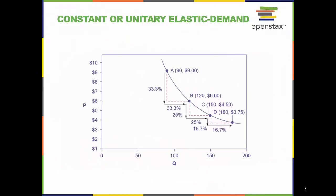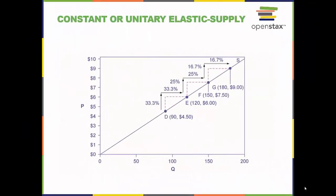A demand curve with constant unitary elasticity will be a curved line. Notice how price and quantity demanded change by a constant percentage in each step down the demand curve. A constant unitary elasticity supply curve is a straight line reaching up from the origin. Between each point, the percentage increase in quantity supplied is the same as the percentage increase in price.